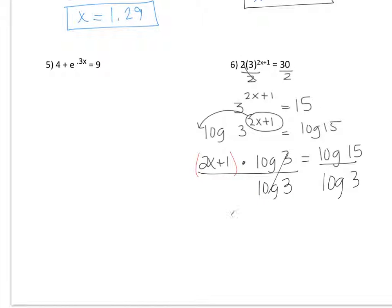And you're left with 2x plus 1 equals whatever log of 15 divided by log of 3 is. So, take a minute, put in log of 15 divided by log of 3, and hit enter. So, you should be getting approximately 2.4649.